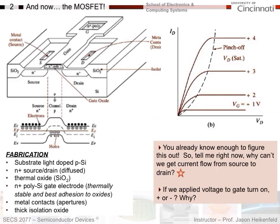Let's do a MOSFET. If you know PN junctions, you pretty much know everything you need. Looking at this figure, the first thing to see is that I've got a lightly doped P-type substrate. I've got a region of N-type semiconductor — N+ — and it's the source and the drain. I make my contacts through the source and drain here.